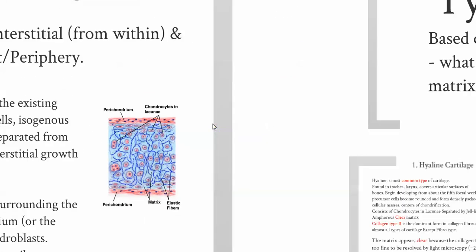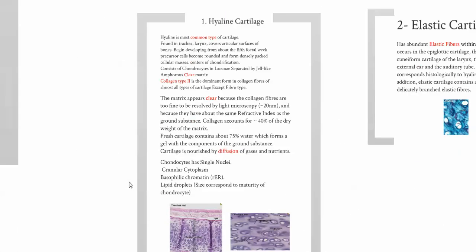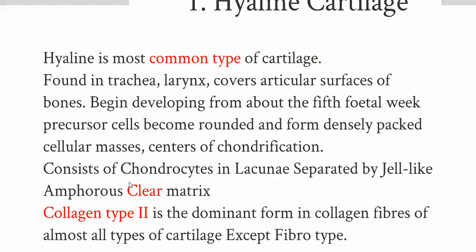There are three types of cartilage based on fiber composition. To make things easier, always ask yourself: what are the cells, what are the fibers, and what is the matrix?